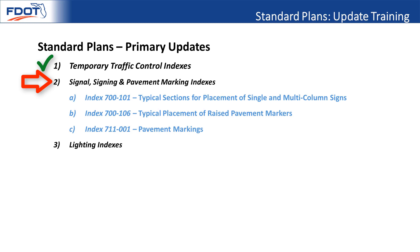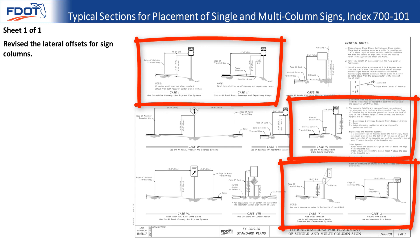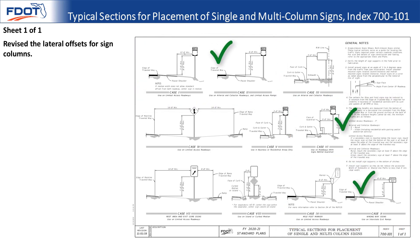Moving on into signing and pavement markings — there were no significant changes to the signal indexes. The first index is 700-101, typical sections for the placement of single and multi-column signs. The main changes are modifications to the lateral offsets for the sign columns, with notes slightly cleaned up. The old 40-foot standard had been causing some confusion, and the changes are now more in line with the MUTCD.